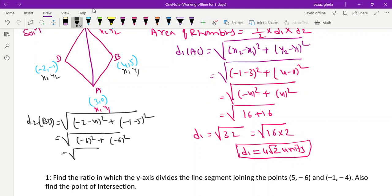So we'll get √(36 + 36) = √72, can be written as 36 into 2. Diagonal 2 will get 6√2 units.